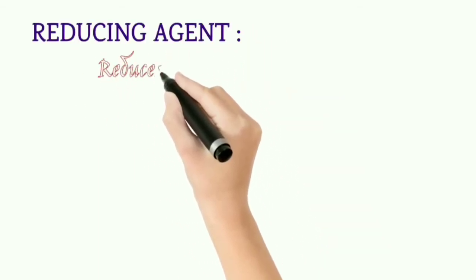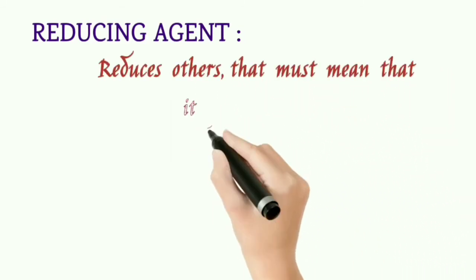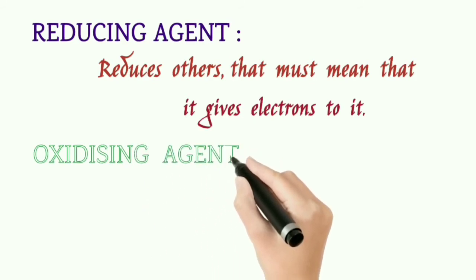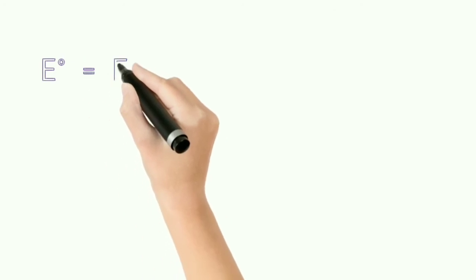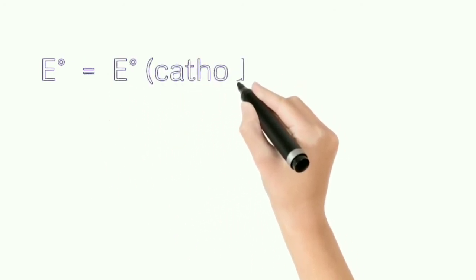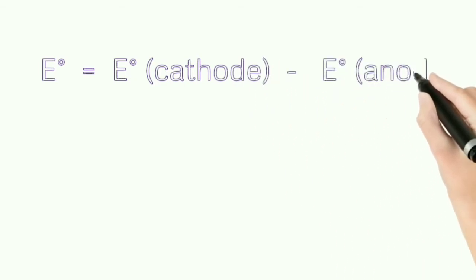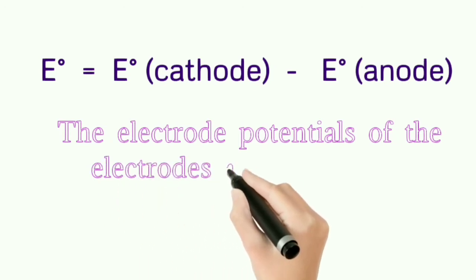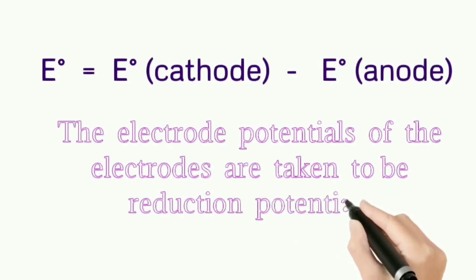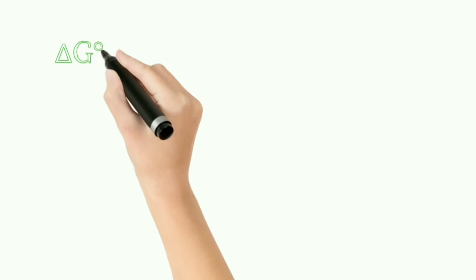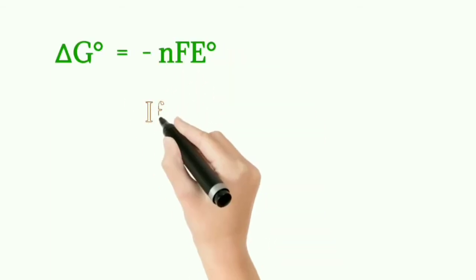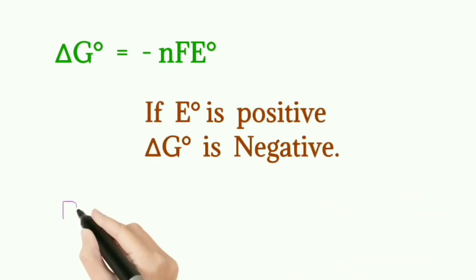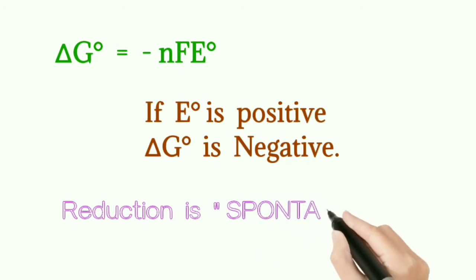A reducing agent is the substance which reduces others — meaning it gives electrons. An oxidizing agent is the one that takes electrons from others. The formula to find E° is: E° = E°(cathode) − E°(anode), where electrode potentials are taken as reduction potentials. When you substitute a positive E° value into ΔG° = −nFE°, you will get a negative ΔG° value, showing the reaction is spontaneous.